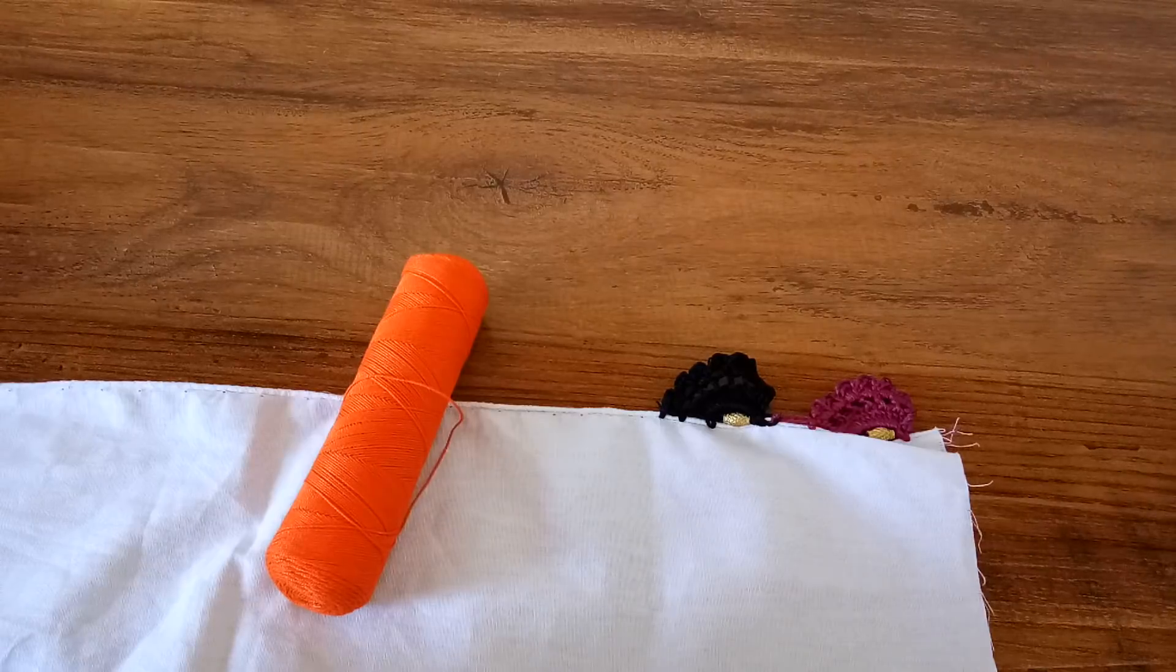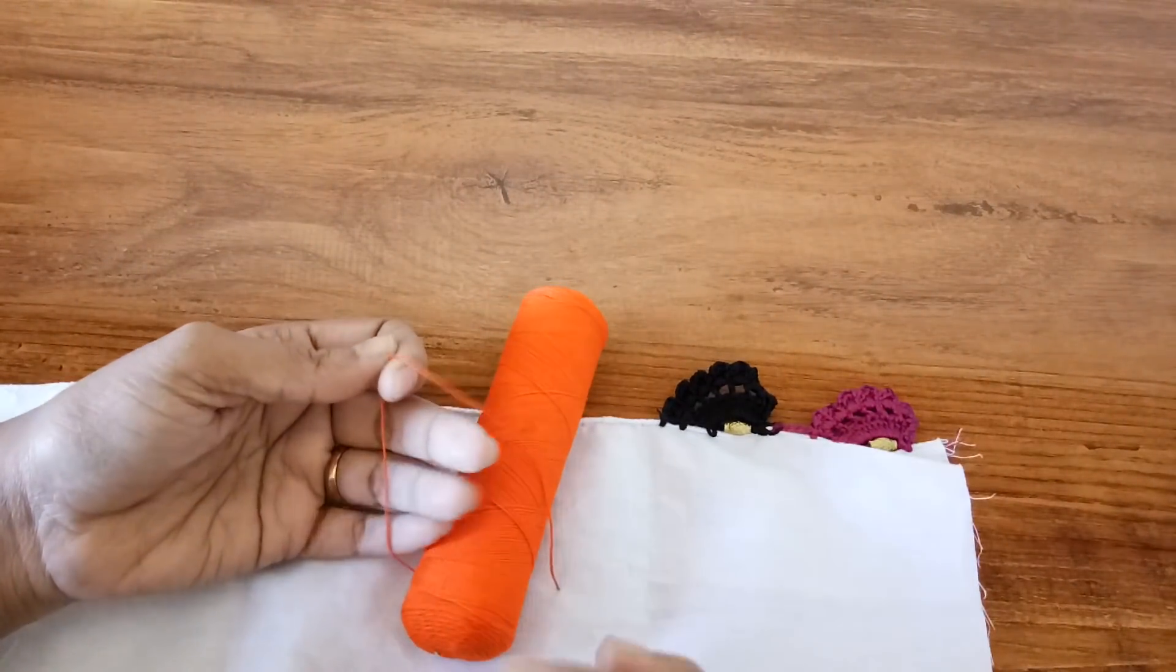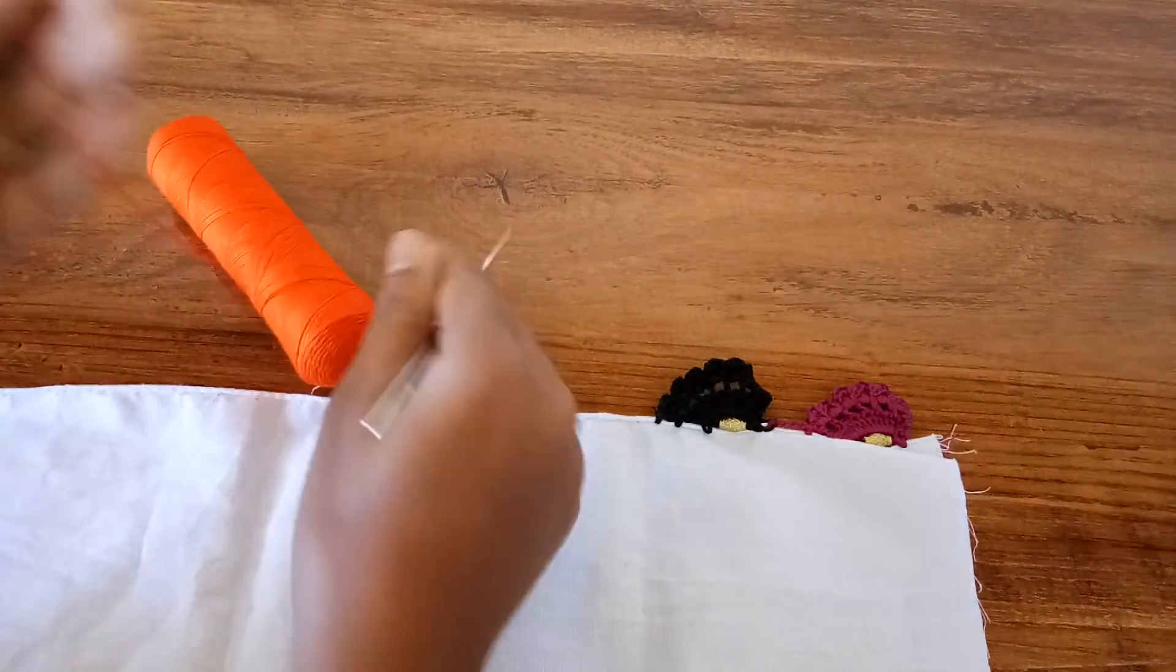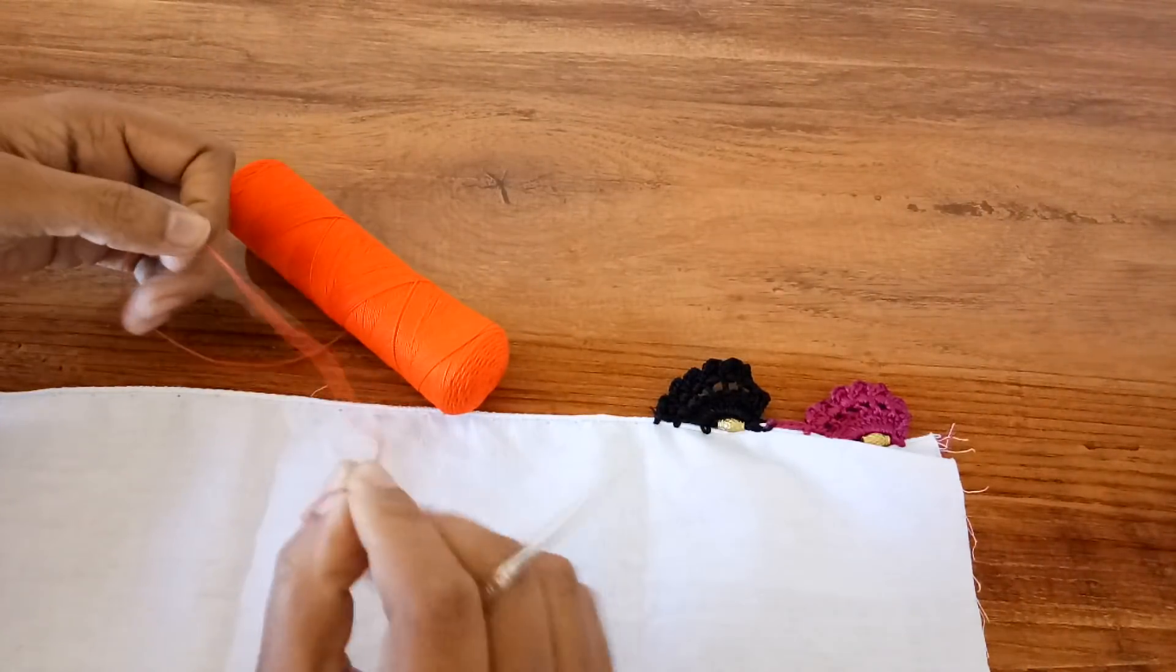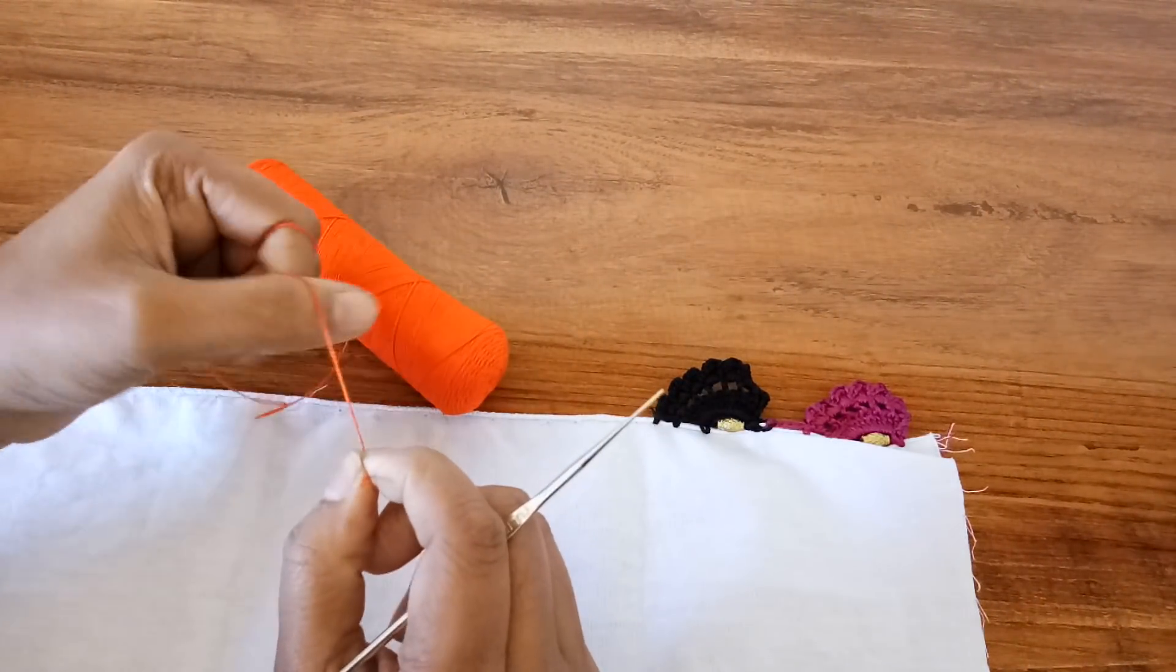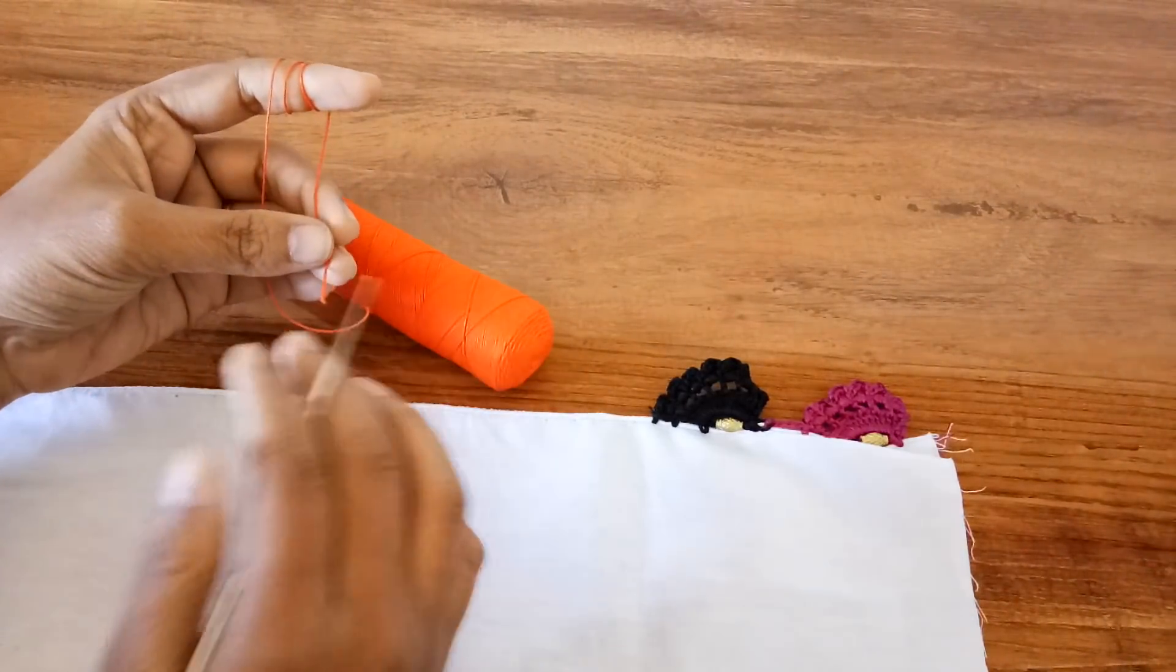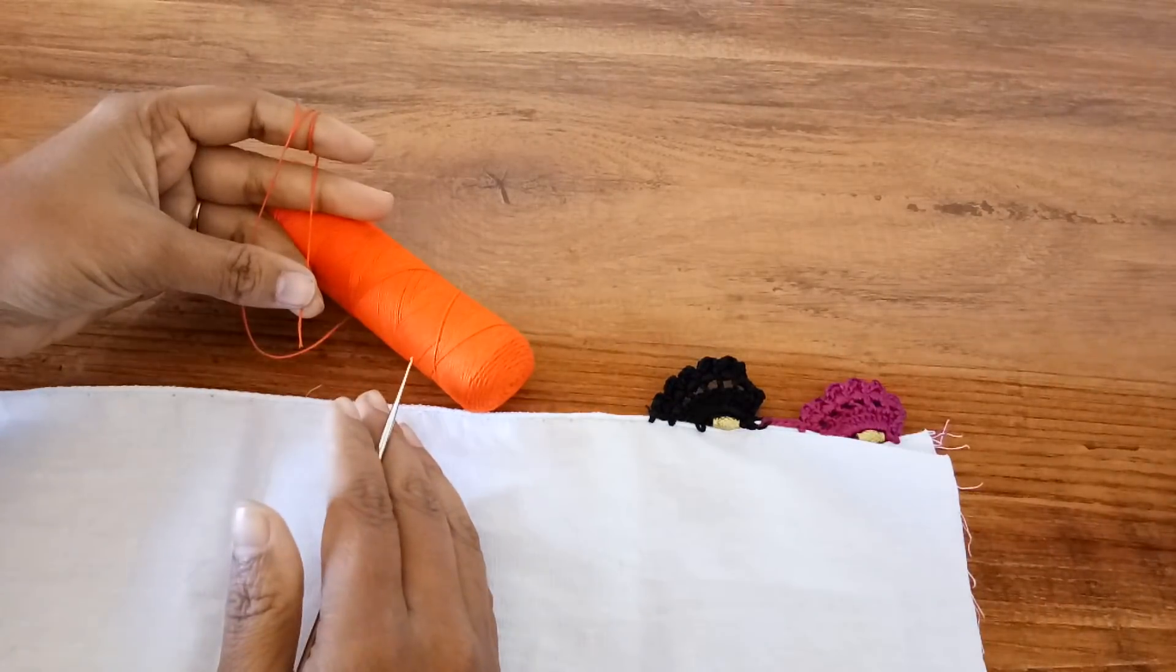For that I'm using cotton thread. I've already showed about the cotton thread in one of my videos. This simple work is specially for cotton saris. You can just choose the thread according to the sari, or you can always use an opposite color, something which is contrast.